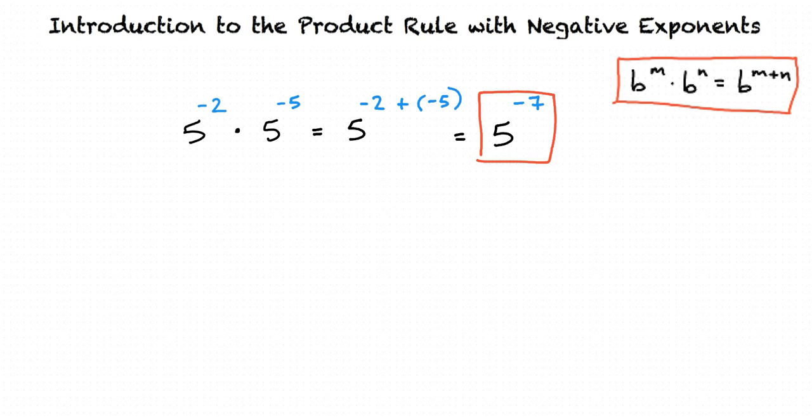What if we have a problem where one exponent is negative and one is positive? Now, if only one exponent is negative, the process is still the same, but the answer will be different.